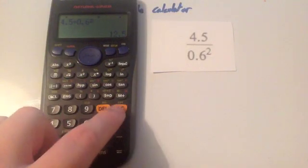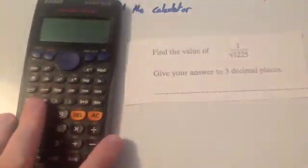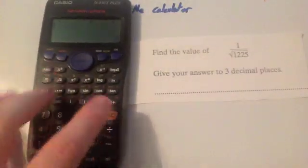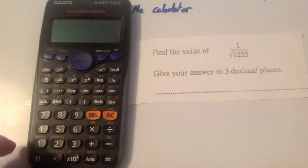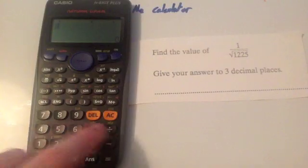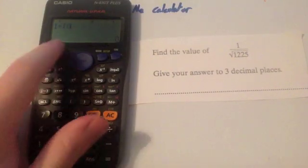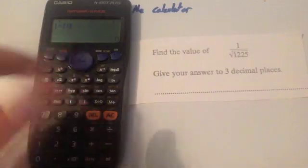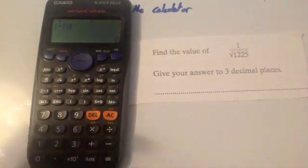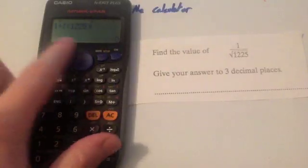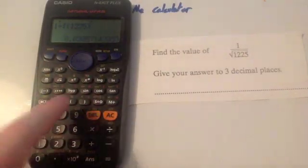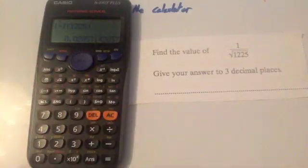Okay. Let's have a look at another question. It says, find the value of 1 divided by the square root of 1,225, giving your answer to three decimal places. So again, this time I'd do 1 divided by the square root. Now notice the square root sign opens up brackets there. So whenever I'm finished typing in my number, I automatically close brackets. So 1, 2, 2, 5, close brackets. And then whenever you do that, you get your answer.